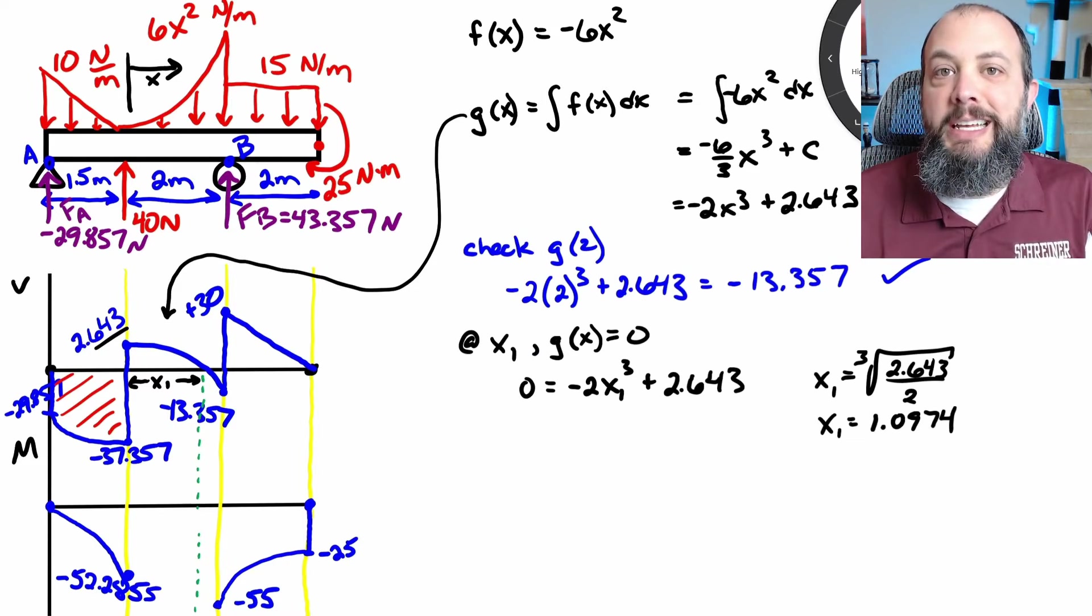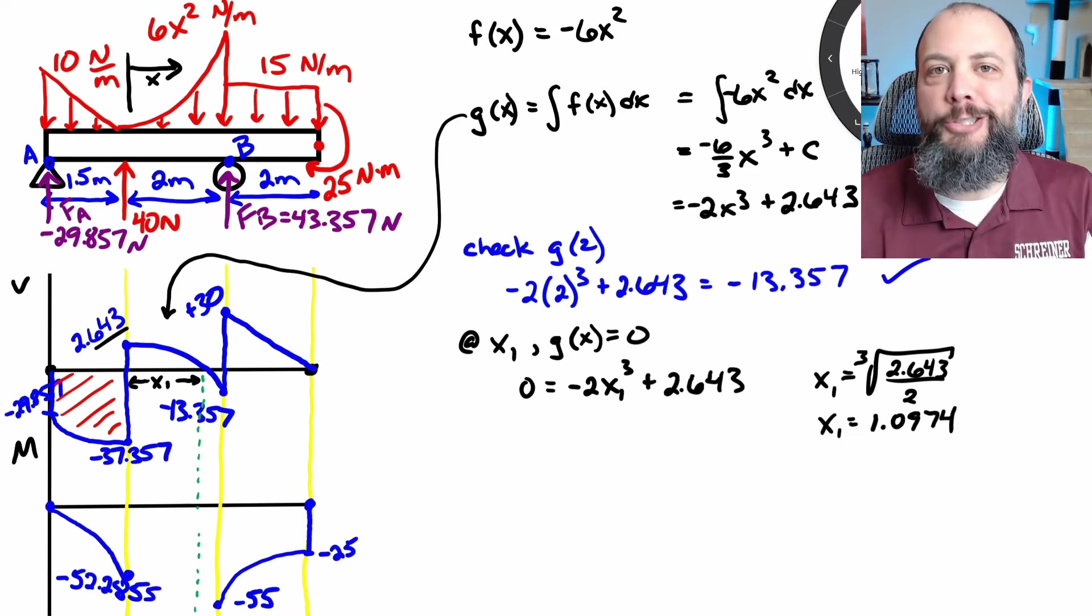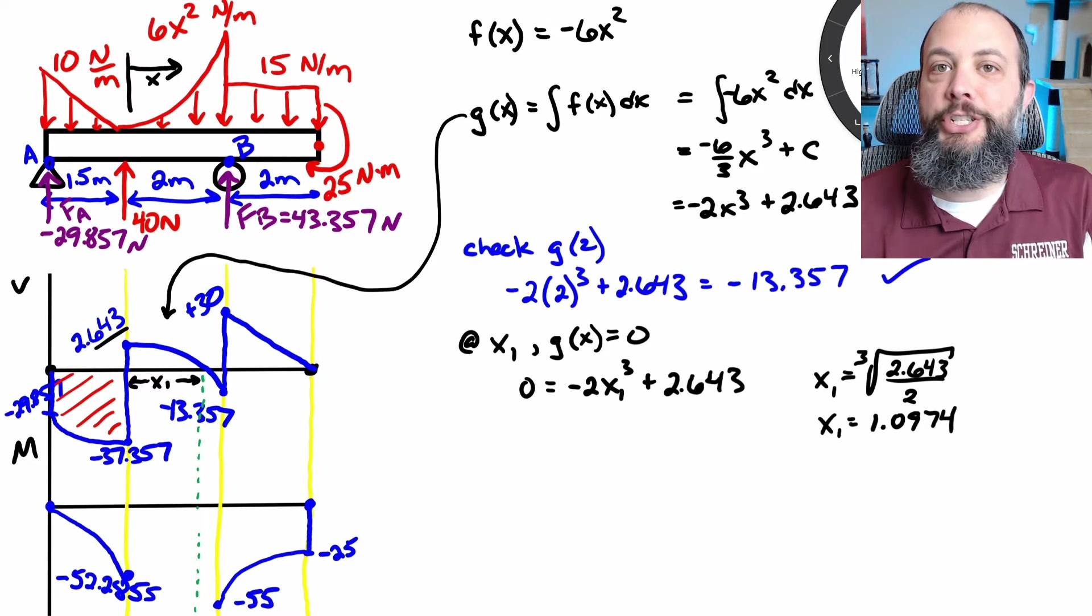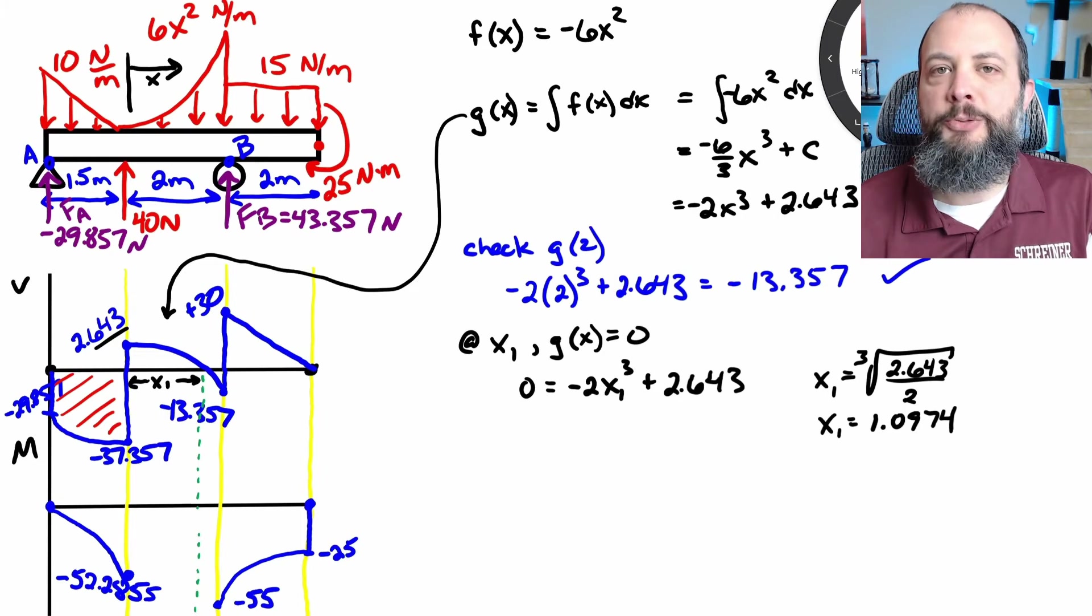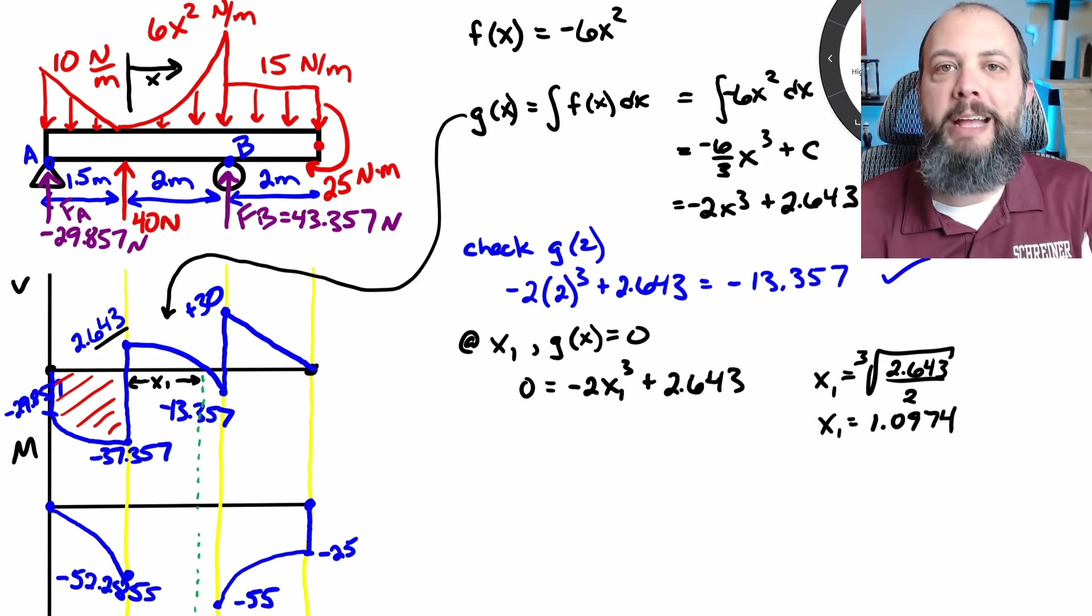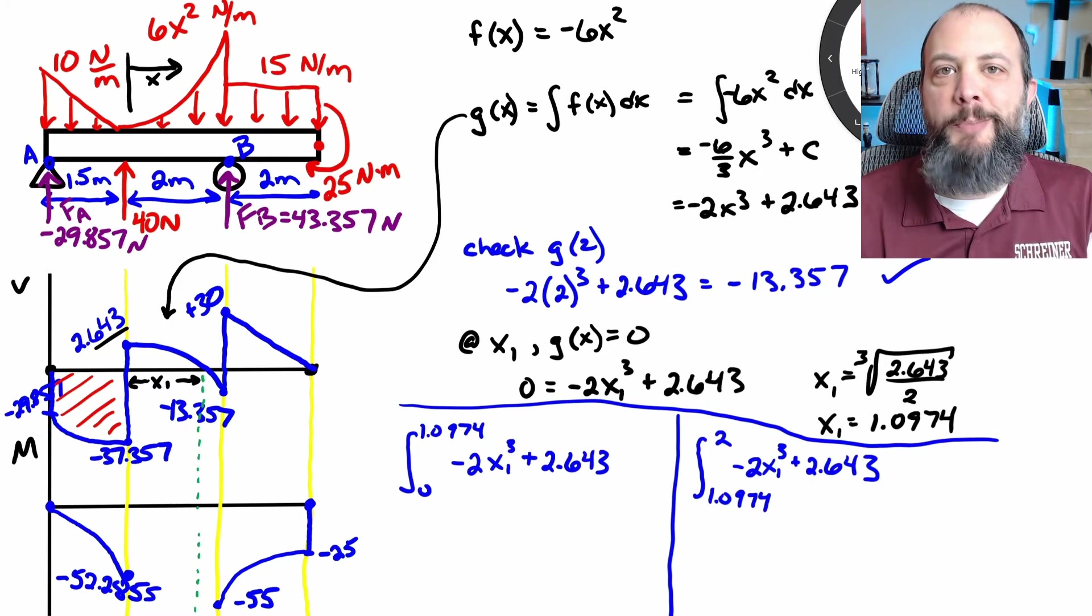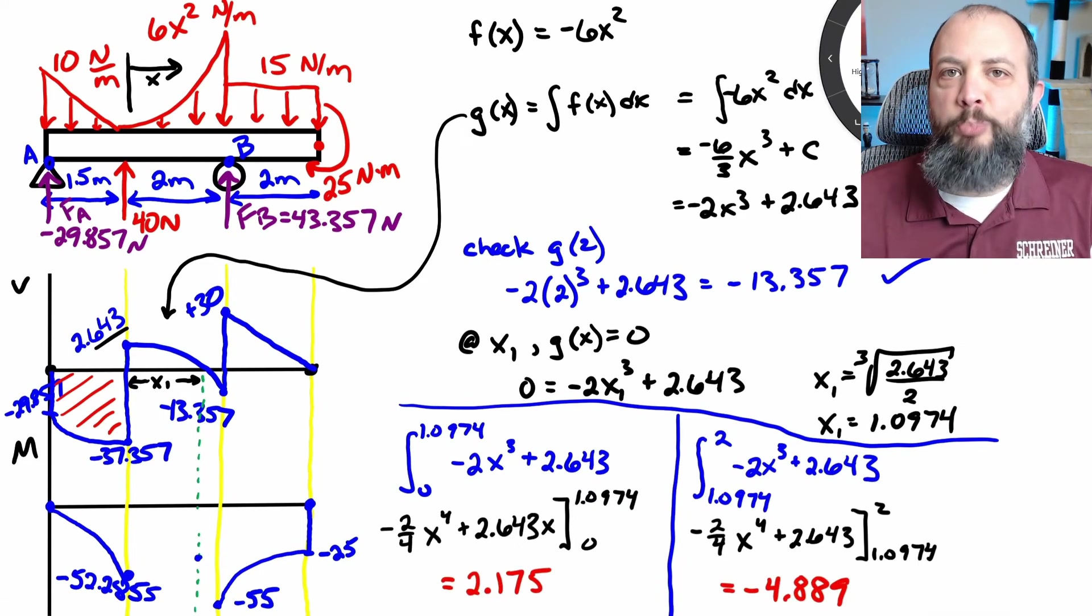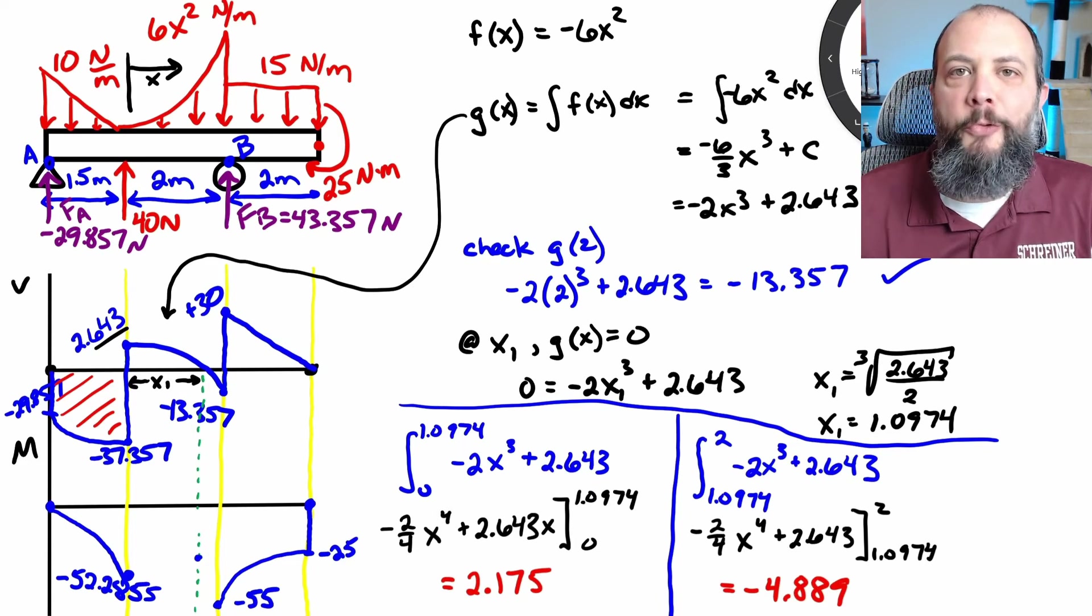So before I can integrate the shape to get areas, I need to find where that green line is located, that value that I've labeled here as x1. And what I do know about that is that this function is going to have a shear value of 0 at x1. So I plug in 0 for v and solve for x1 to get this value of 1.09. And so what I know is all of the area from 0 to 1.09 is positive on shear, which will be increasing on moment. And all of the area from 1.09 to 2 will be negative on shear and decreasing on moment.